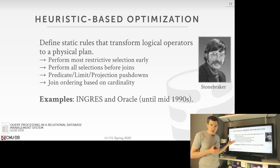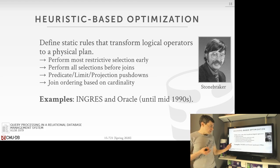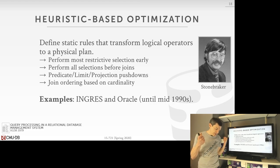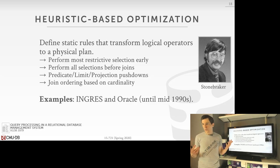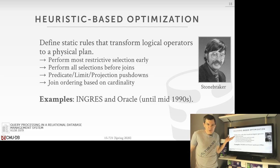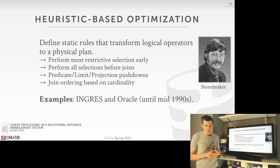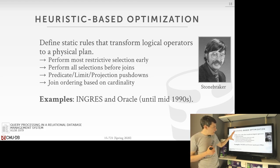Two of the three first major relational database systems from the 1970s — Ingress out of Berkeley from Mike Stonebraker and Oracle from Larry Ellison — used this heuristic approach. Back then, the resources available to actually run database software were quite limited, and the databases they were storing were super small — the Ingress paper talks about scanning tables with like 300 tuples. The complexity of the queries they were dealing with was much less than what we deal with today.